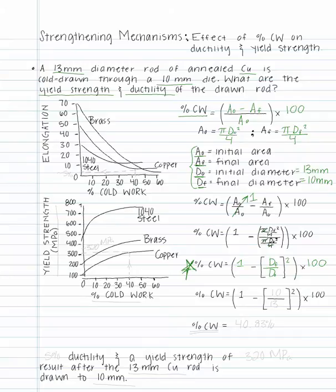Substituting in 13 mm for D₀ and 10 mm for D_f yields a percent cold work of 40.83%.